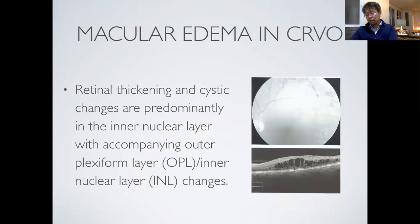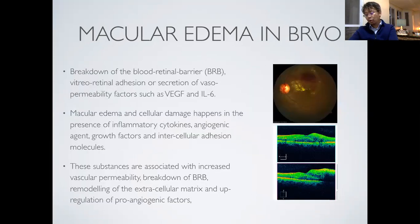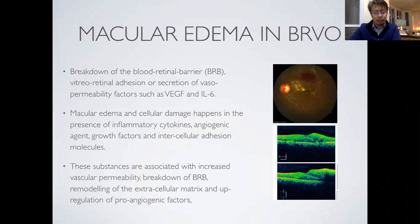The OCT shows retinal thickening and cystic changes, predominantly in the inner nuclear layer with accompanying outer plexiform layer and outer nuclear layer changes. Macular edema is caused by the breakdown of the blood-retinal barrier, retinal adhesion or secretion of vascular permeability factors such as VEGF and interleukin-6. Macular edema and cellular damage occur in the presence of inflammatory cytokines, angiogenic agents, growth factors, and intercellular adhesion molecules. These substances are associated with increased vascular permeability, breakdown of BRB, remodeling of extracellular matrix, and upregulation of pro-angiogenic factors.